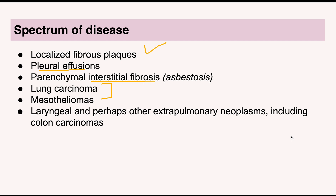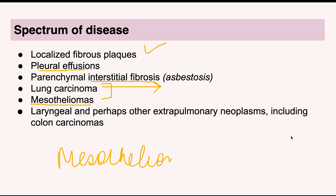In terms of malignancies, asbestos can cause lung carcinoma, which is also caused by tobacco smoking. However, a very specific tumor caused by asbestos is mesothelioma, which has a very strong relation with asbestos exposure. Some extra-pulmonary neoplasms can also be caused by asbestos, such as colon carcinomas and laryngeal carcinomas, so organs apart from the lung can also be involved.